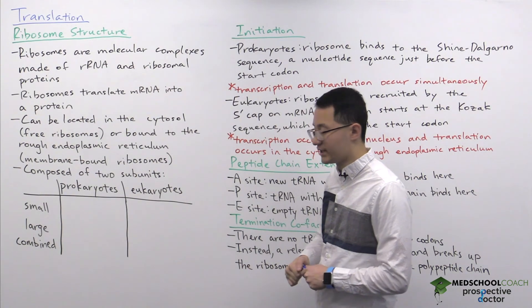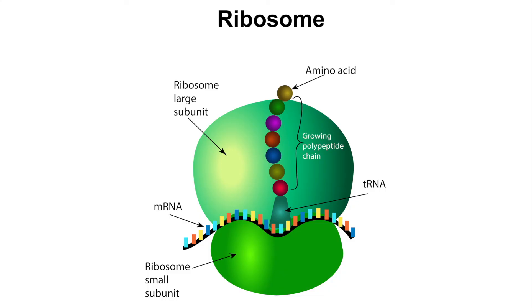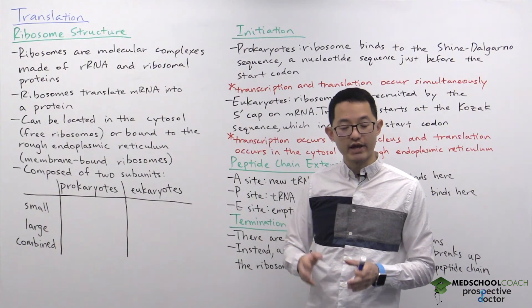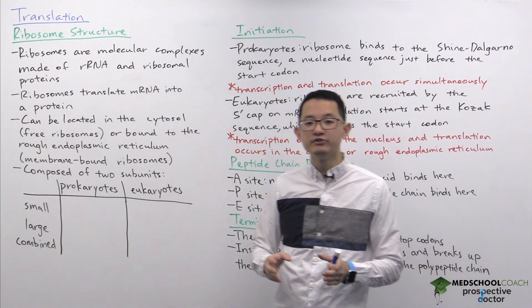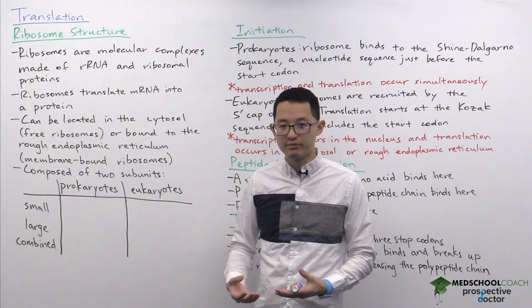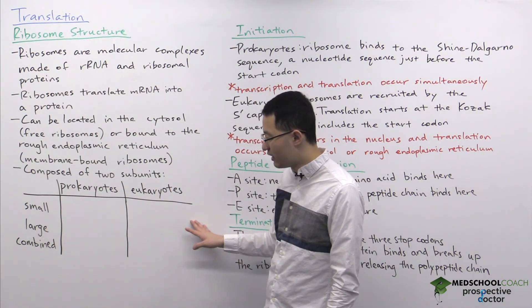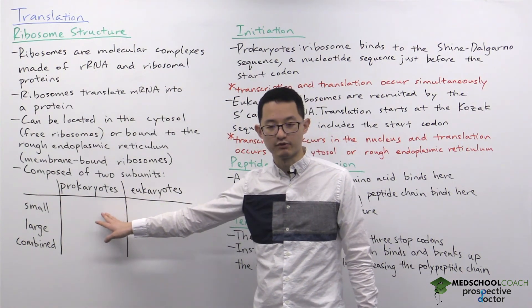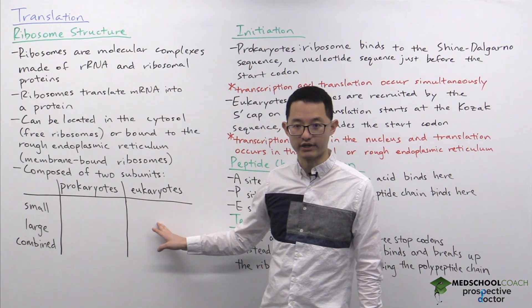Looking at this diagram, you can see that the ribosome has two subunits: a small subunit and a large subunit, with the mRNA being translated sandwiched in between. For the MCAT, you need to know some numbers related to the small and large subunits, and also the difference between prokaryotes and eukaryotes.